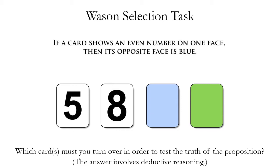There are many formal fallacies you can make, more than just two. We're going to cover two that are very common — they are similar in form to modus ponens and modus tollens, two of the valid argument forms, but they're just different enough to make them fallacies. So let's look at this Wason selection task.